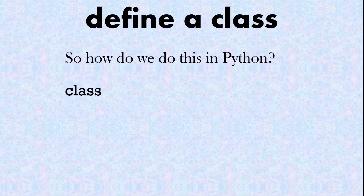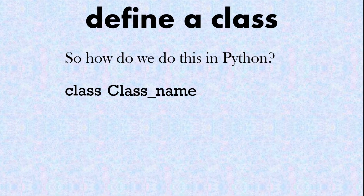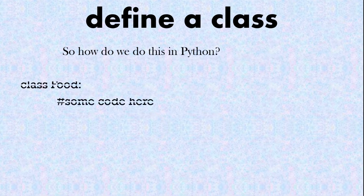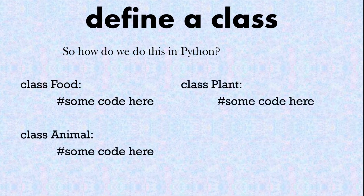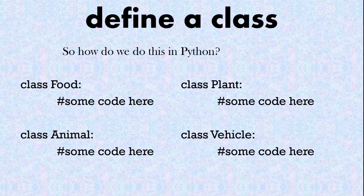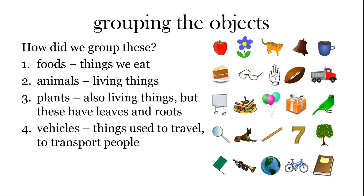So let's look at part one — define a class. How do we do this in Python? Start off with the word 'class', then we have the class name. It's convention to use an uppercase letter to start a class name. In Python, like other programming languages, we normally use this uppercase capital letter when dealing with a class. Then the colon, then some code underneath. So we had the class for food, the animal class, the plant class, and the vehicle class, and we group these objects into these classes.